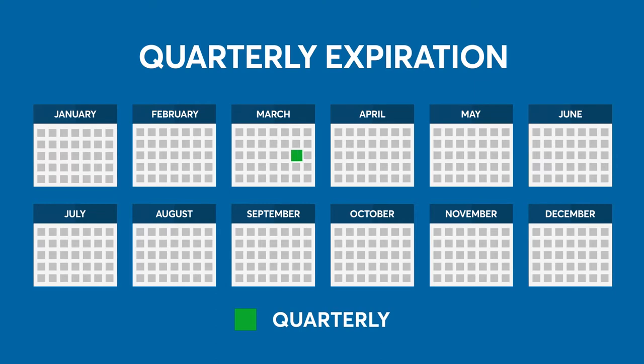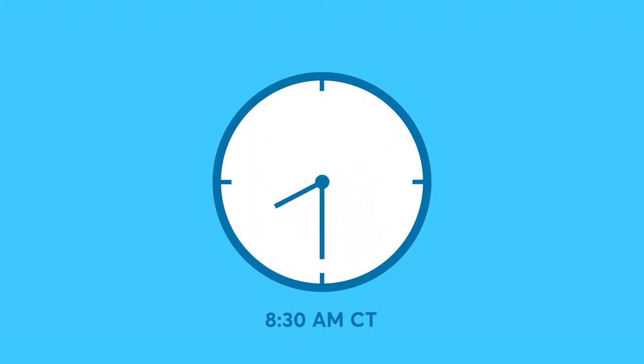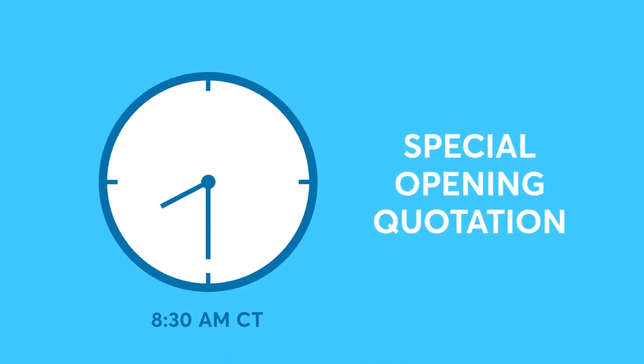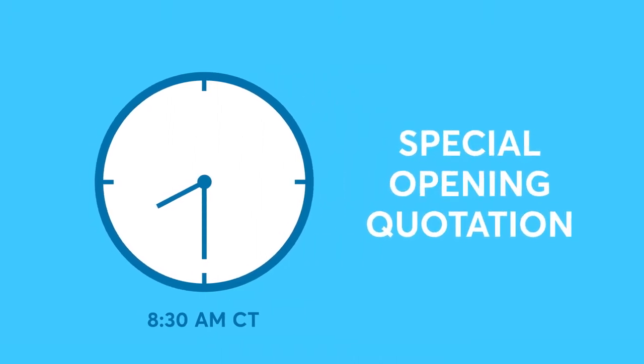For example, in January, the March and June quarterly options would be available, while in August, the September and December quarterly options would be available. These options will expire and have their moneyness determined by the index's official opening level at 8:30 a.m. Central Time, based on the special opening quotation of the respective index.